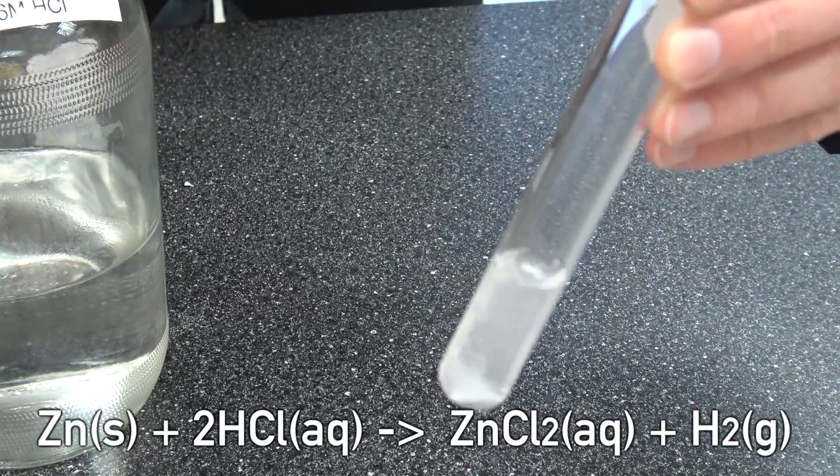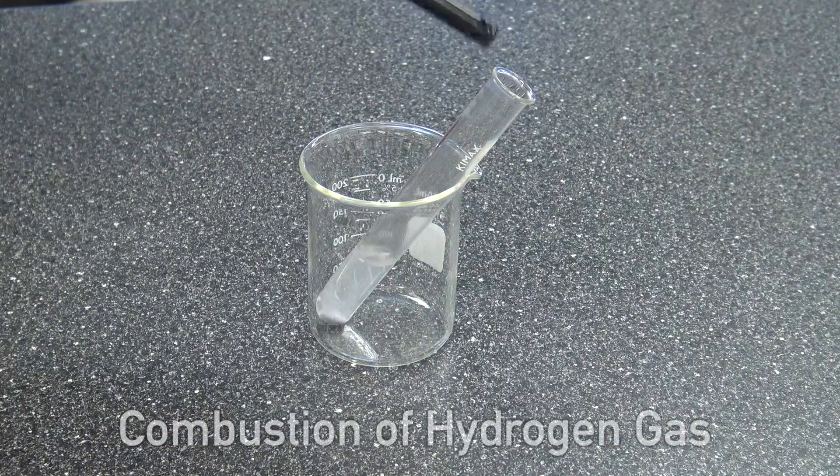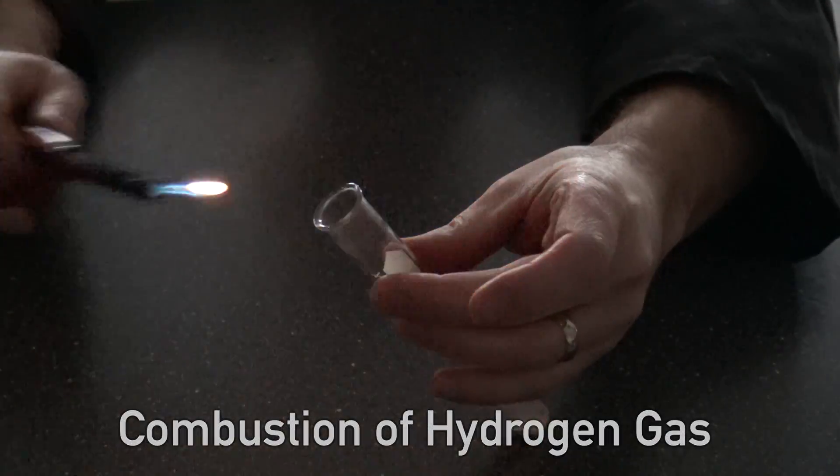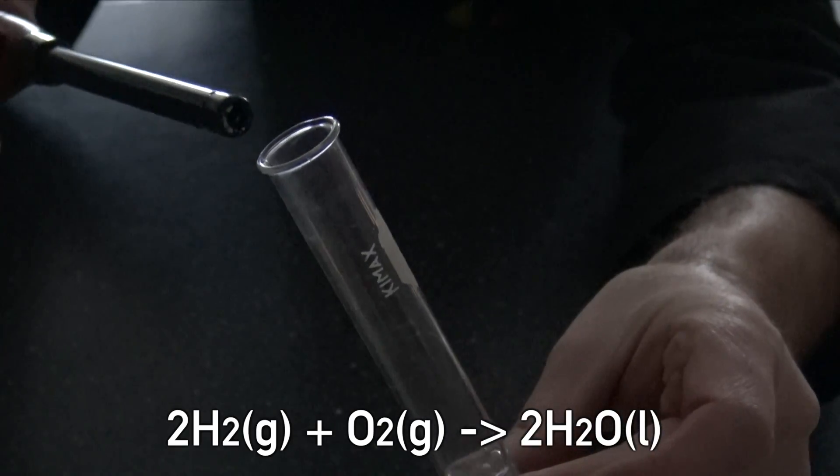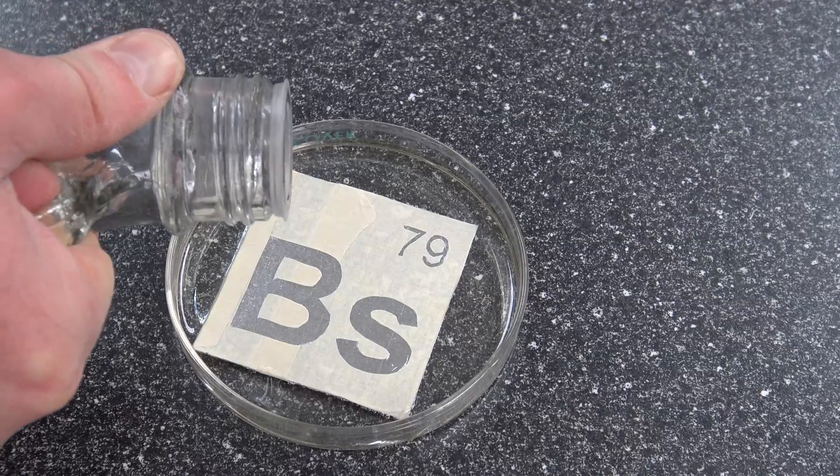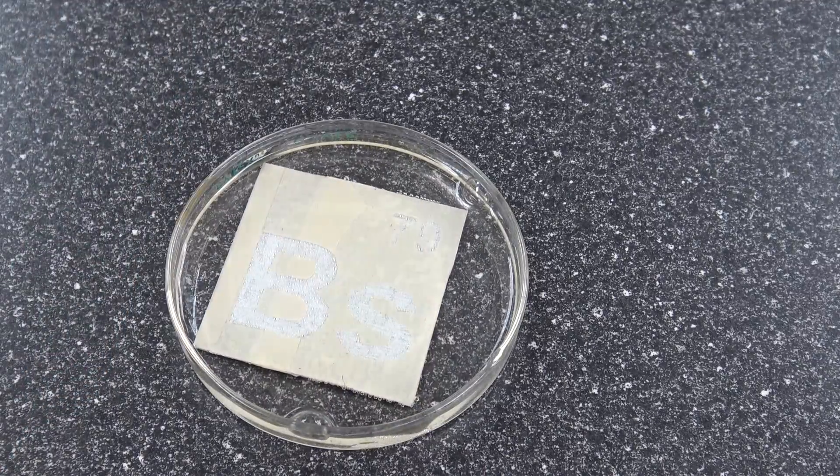So I've got some hydrochloric acid in this test tube. I dropped some zinc in there and you can see the reaction that's going on. We have a replacement reaction and we're creating hydrogen gas. Now that hydrogen gas is combustible. Look at this. And when we light it on fire we're just making water. Hydrogen combines with oxygen to make water.